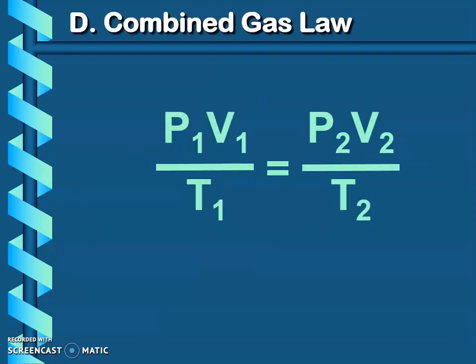If we were to combine them, we would see that P1 times V1 divided by T1 would equal P2 times V2 divided by T2. This is your combined gas law equation, so you can go ahead and write this down on that equation sheet that you have.